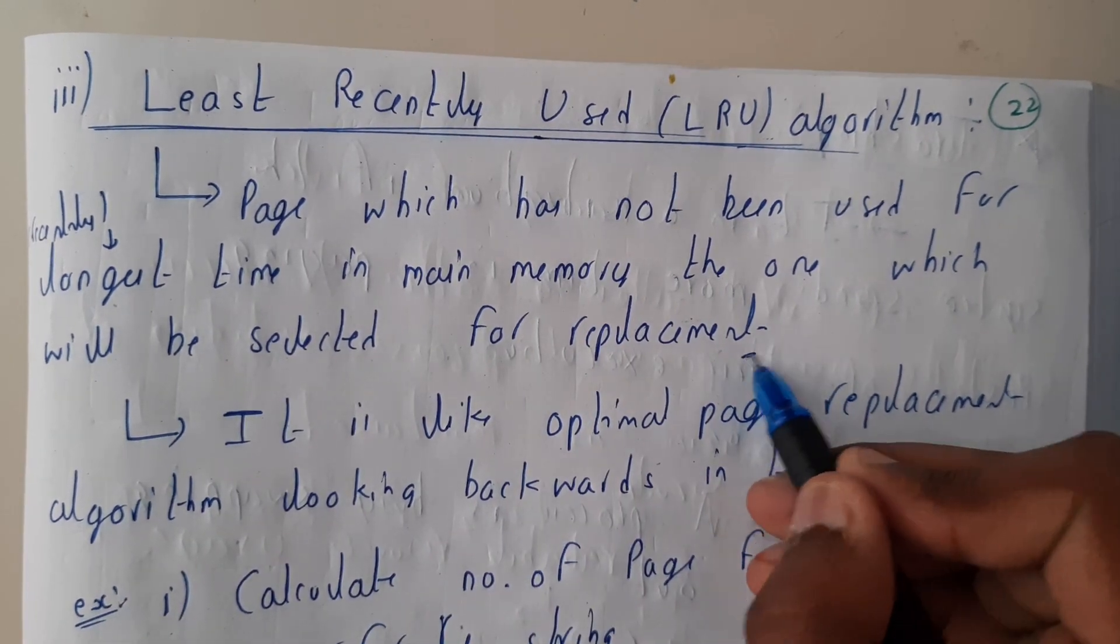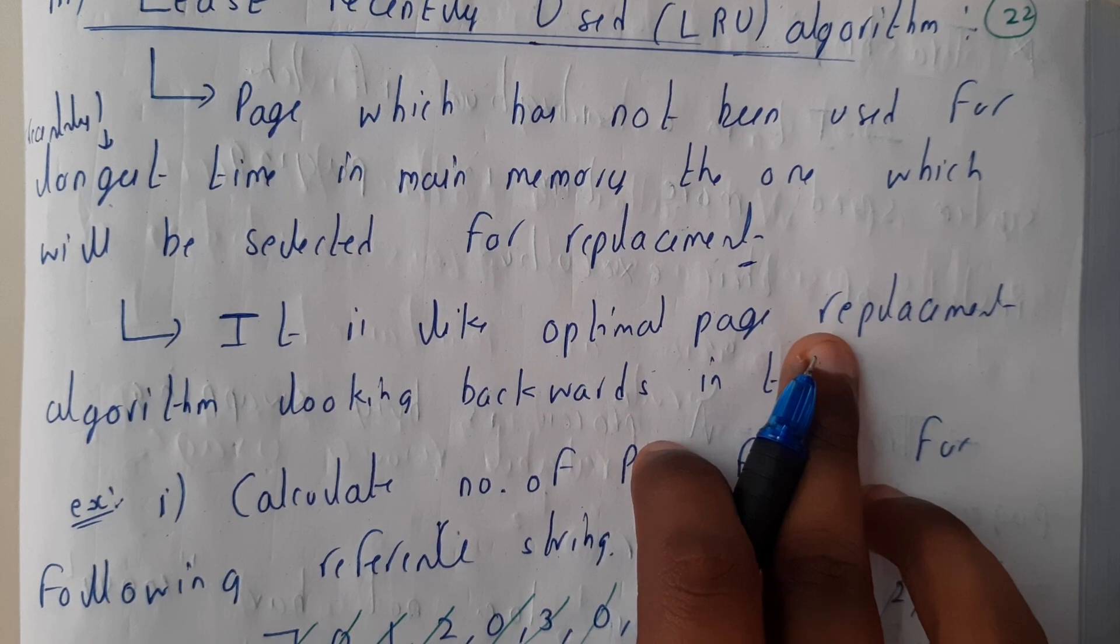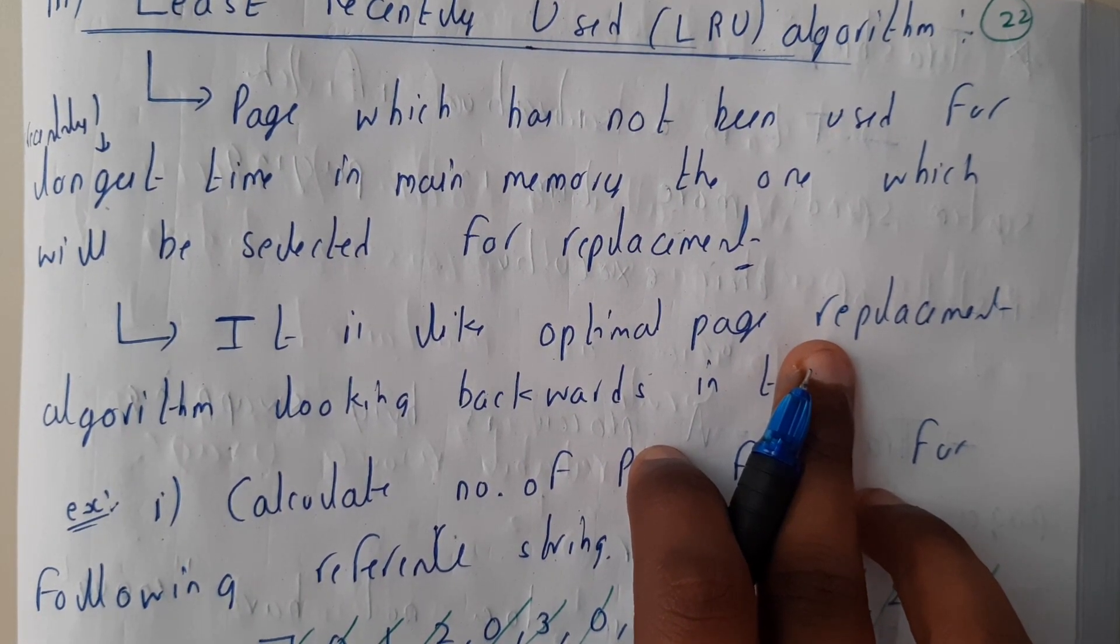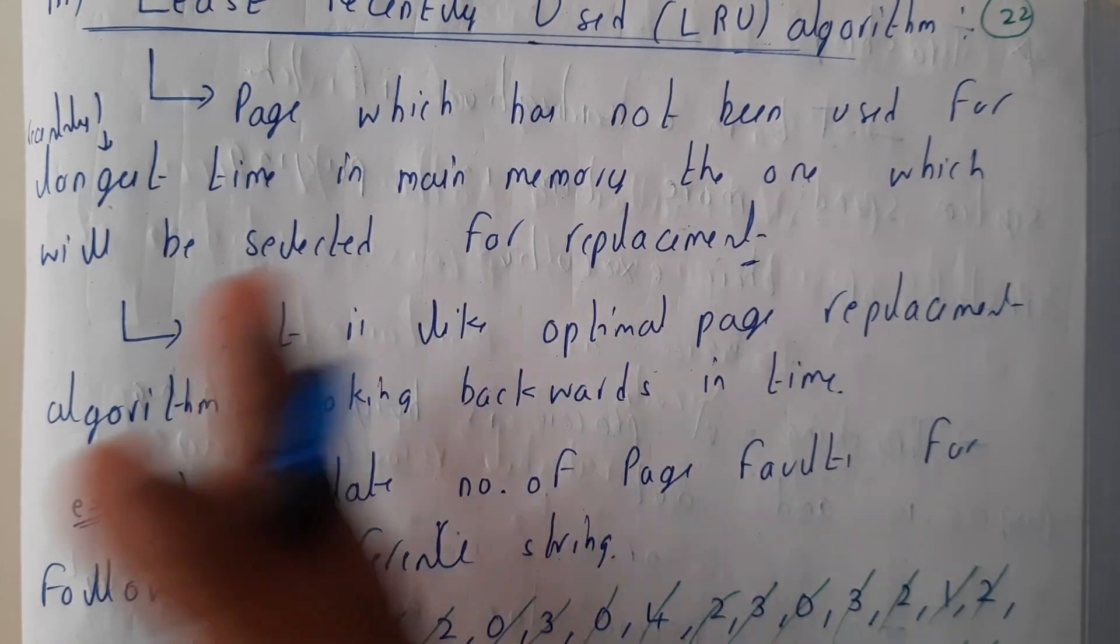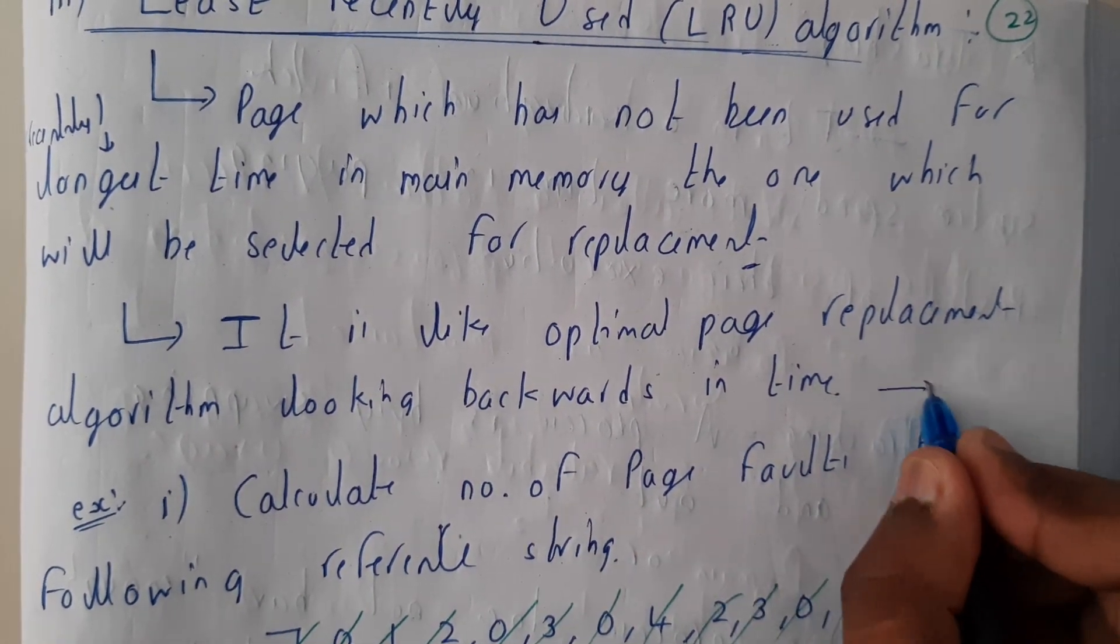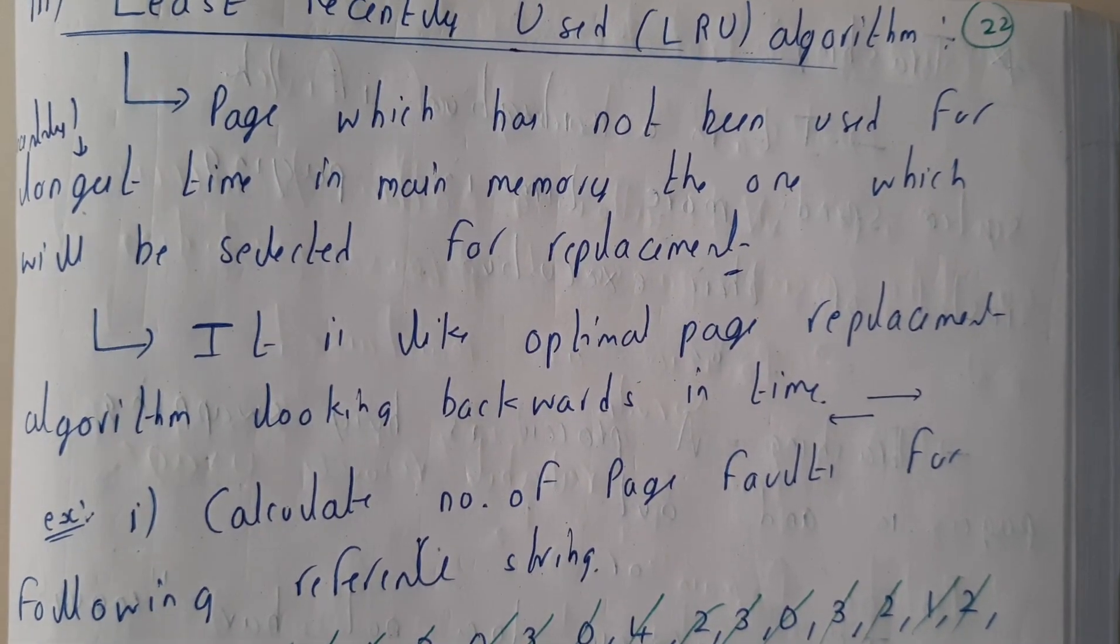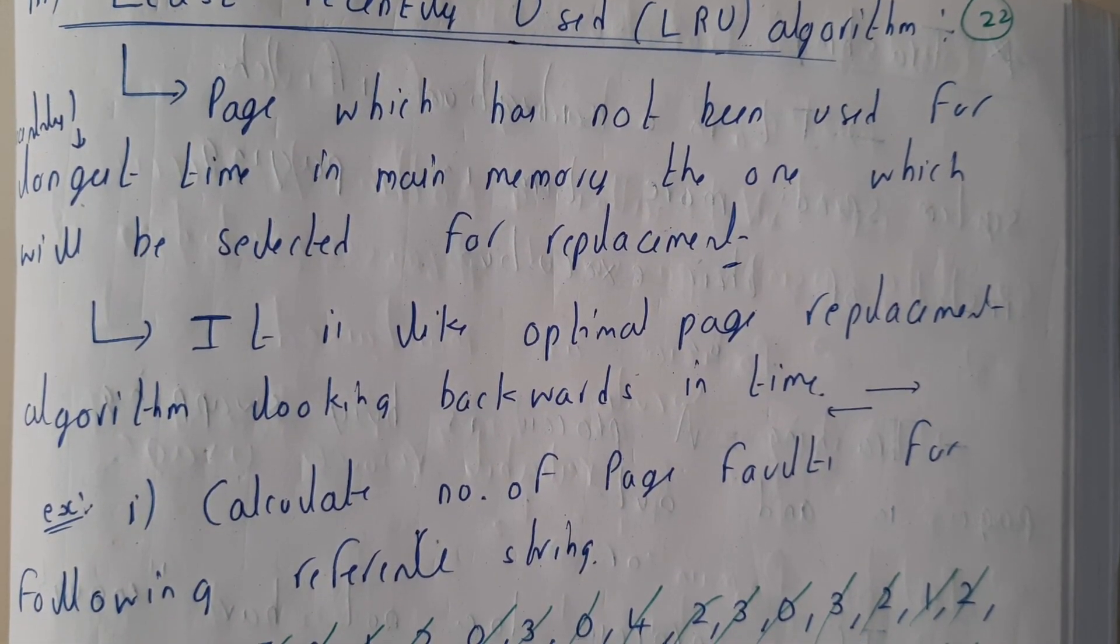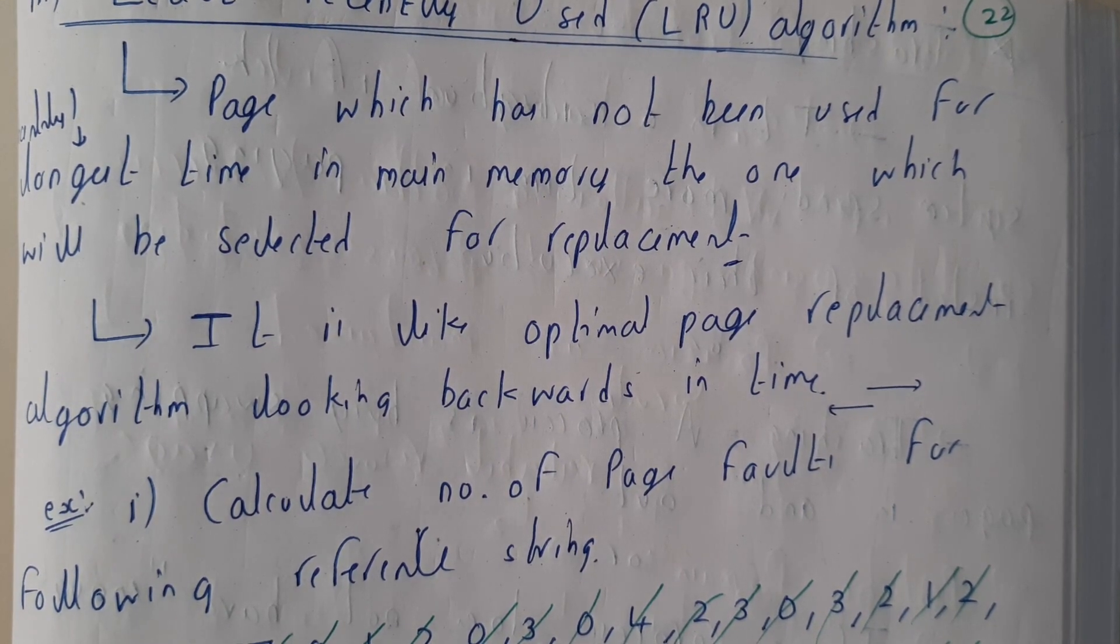It is like optimal page replacement, but in the backward direction. In that we used to check in the future, but now you'll be checking in the past. That's the only difference. I'll be just doing a small example so that you can understand it clearly. As we have already discussed two paging algorithms, I hope everyone understood the process.